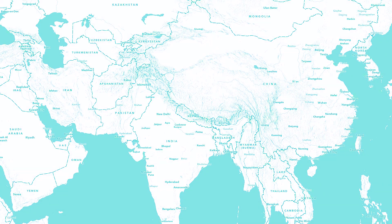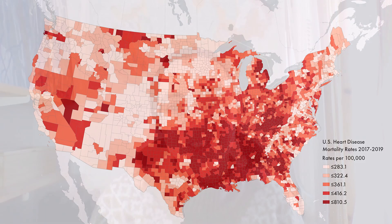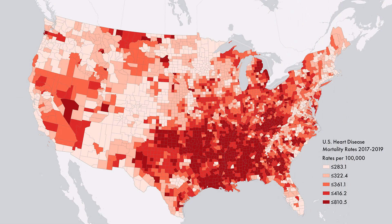Color connotations are feelings or ideas that are invoked by different colors, and they matter for maps. Hi, I'm Heather and I'm a cartographer. In this video, I'll show you a few examples of color connotations. I'll use ArcGIS Pro, but these examples are relevant to any mapping situation.